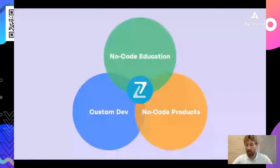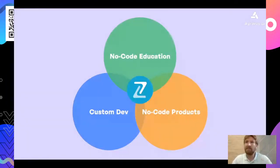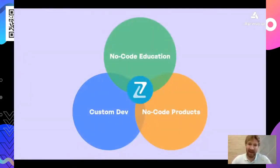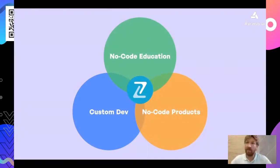Very quickly we transitioned to the custom development sector — meaning we were doing turnkey projects for people. When someone came to us needing help, we might coach them initially, but a lot of these people would actually propose we just do it for them. They'd say: 'Tell me how much time you need and I'm happy to pay for you to do it in two hours instead of you coaching me for 20 hours.' That happened a lot, and we segued directly from education into custom development.